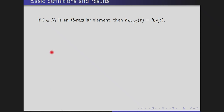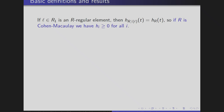Notice also that if we take a regular element L of degree one and go modulo L, the H-polynomial doesn't change — it's an easy computation. So if R is Cohen-Macaulay, then all the coefficients in the H-polynomial are non-negative.